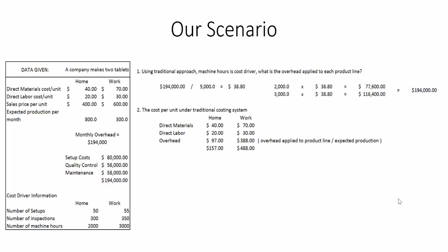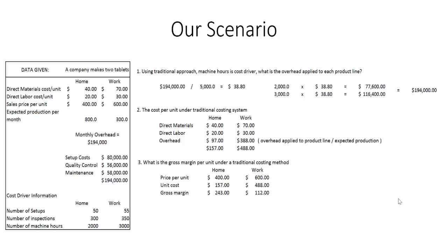Our total cost of a home tablet is $40 plus $20 plus $97, giving us $157. The same type of calculation works on the work tablet: overhead of $116,400 divided by expected production of 300 units. For gross margin under the traditional method, the home tablet's price is $400 minus unit cost of $157, giving a gross margin of $243. The work tablet's sales price was $600 minus unit cost of $488, giving a gross margin of $112.